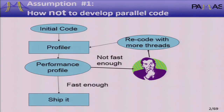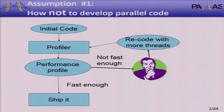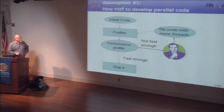The first bad approach is very common: take some initial legacy code, profile it, look at your performance profile. If it's not fast enough, you sit down with your human intelligence — maybe you've taken some courses on P-threads — scratch your head, try and recode more threads, run the profile again, iterate. Hopefully at some point it's fast enough, and then you ship it.